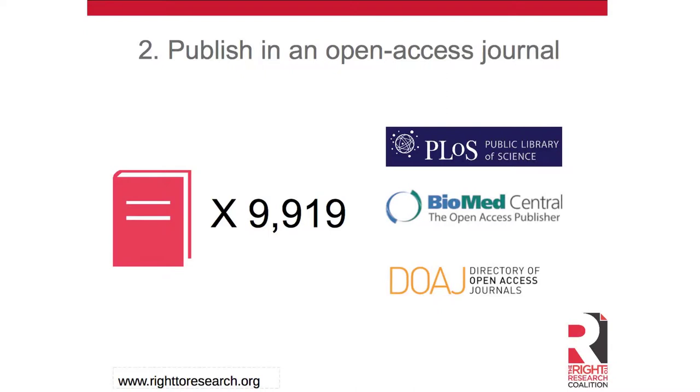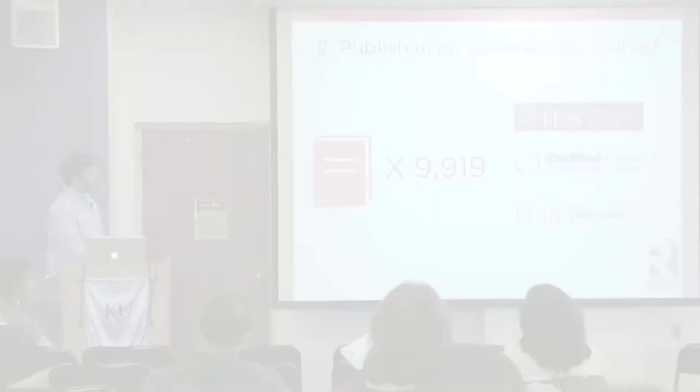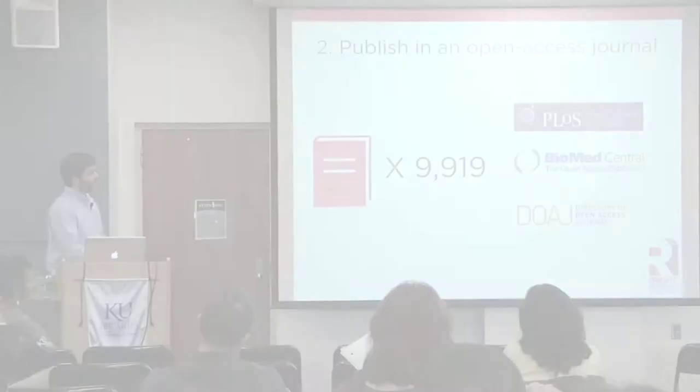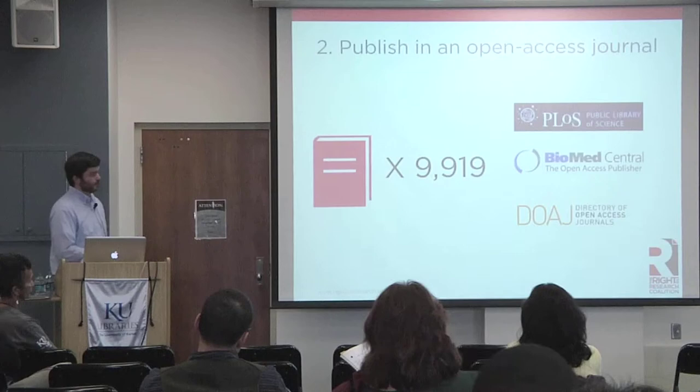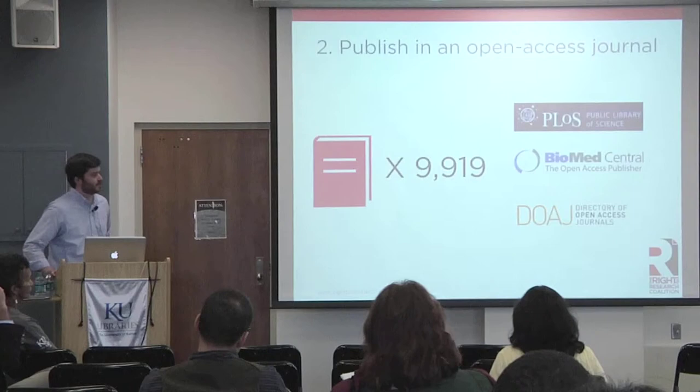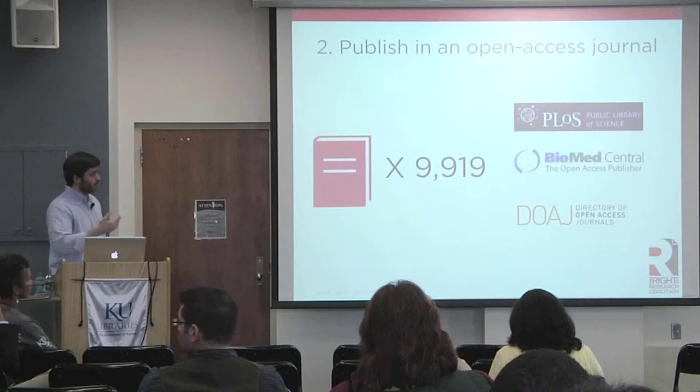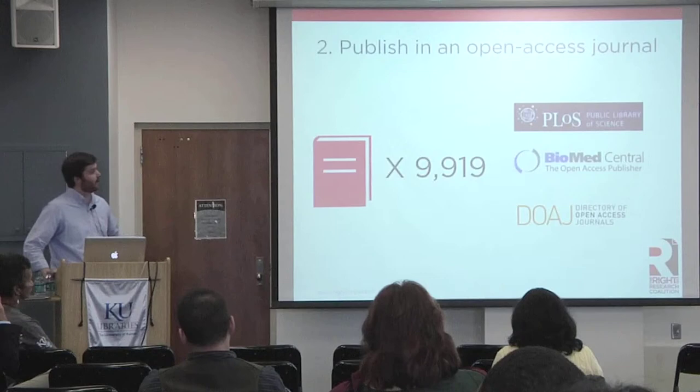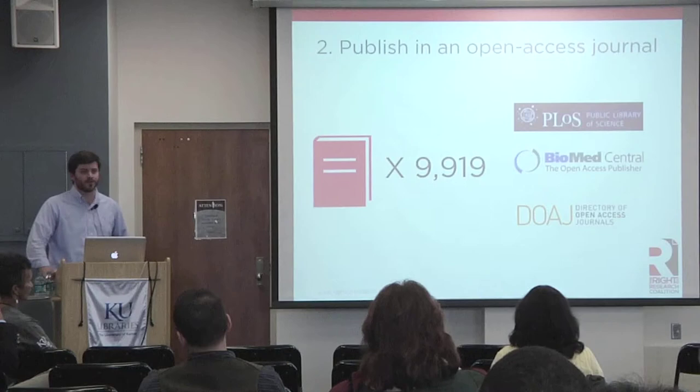The second path is to publish in an open access journal that makes all the articles it publishes immediately and freely available online with an open license. Today there are just shy of 10,000 open access journals — I looked at my presentation from last year and there were less than 9,000, so it continues to grow at an incredibly rapid pace. You might already know lots of open access journals like those published by PLOS or BioMed Central. There's a great resource called the Directory of Open Access Journals, or DOAJ, that lists all these journals sorted by discipline.